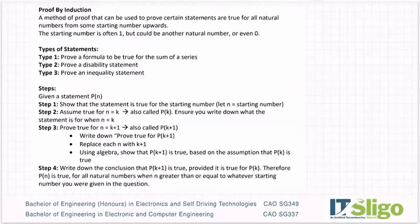Proof by induction is used to prove certain statements are true for all natural numbers from some starting number upwards, and that starting number is often one, it's normally one, but it could be another natural number or could even be zero. I'll draw your attention to that as we're doing them and I have one towards the end that doesn't start with one, just to show you how it's written and where to look out for it.